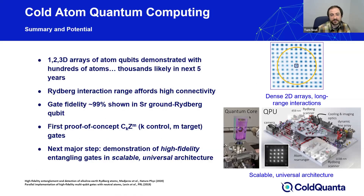This brings me to the summary and outlook I see for cold atom quantum computing. In the past couple of years, we've seen 1D, 2D, and even 3D arrays of atom qubits demonstrated with hundreds of atoms, and I think we'll see extending that to thousands of atoms well controlled in the next few years.